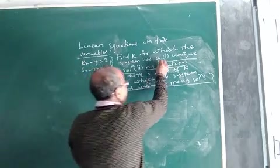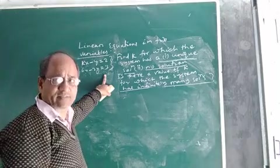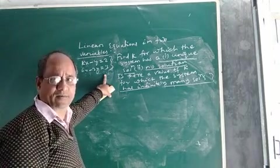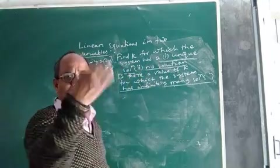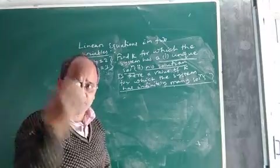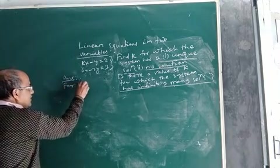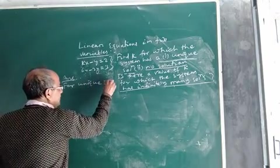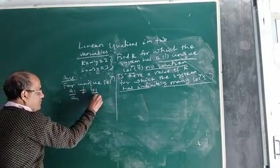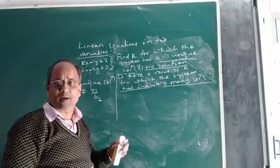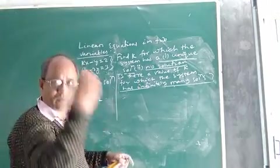Case 1: Unique solution. For a system of equations to have a unique solution, the condition is A1 by A2 not equal to B1 by B2. Here A1 is K, A2 is 6, so K by 6 not equal to minus 1 by minus 2, which equals 1 by 2. This means K by 6 not equal to 1 by 2, so K not equal to 3. Unique means one and only one solution.